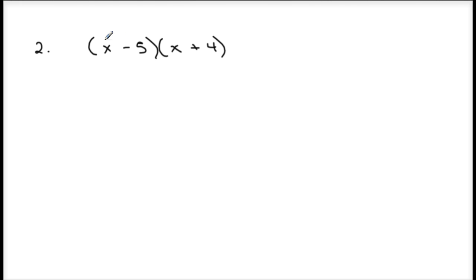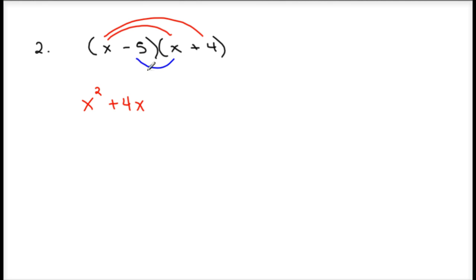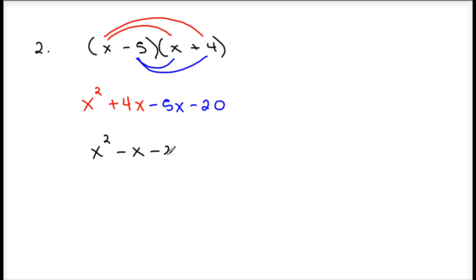Let's take a look at the next example. I'm going to take my first term and multiply it by both terms in the second quantity. x times x is x squared; x times 4 is positive 4x. Now moving to my second term: negative 5 times x is negative 5x; negative 5 times positive 4 is negative 20. Combine like terms: x squared, positive 4x minus 5x is minus x, minus 20.